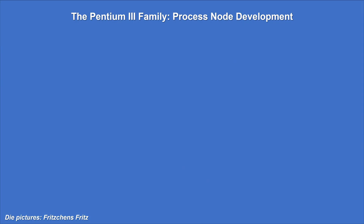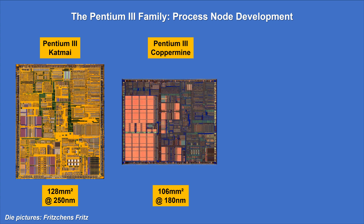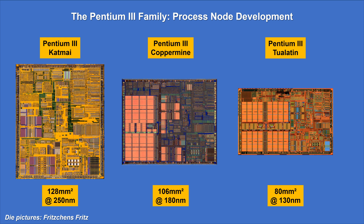So how does a Pentium 3 silicon die look like? For this I will use the fantastic work of Fritzchens Fritz, who is a passionate silicon die photographer — the pictures are also available on Wikipedia. The 250 nm Katmai core is 128 mm² in size. The 180 nm process node as applied on the Coppermine core reduced the die size, and the second level cache is now visibly integrated in the left area of the chip. Tualatin, produced at 130 nm, allows the die to shrink further to 80 mm², although the second level cache doubled in size.